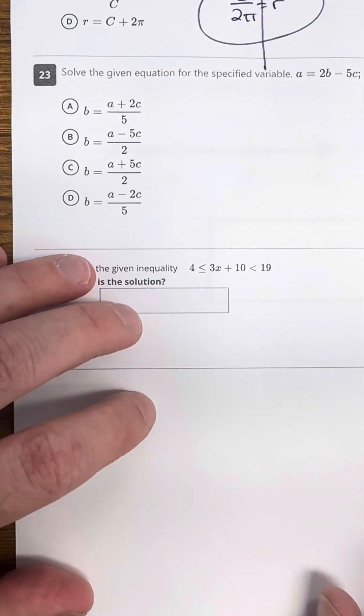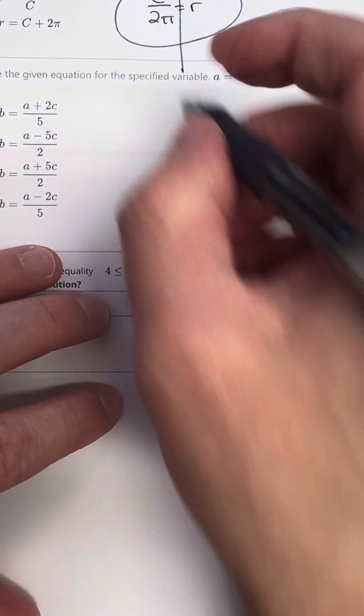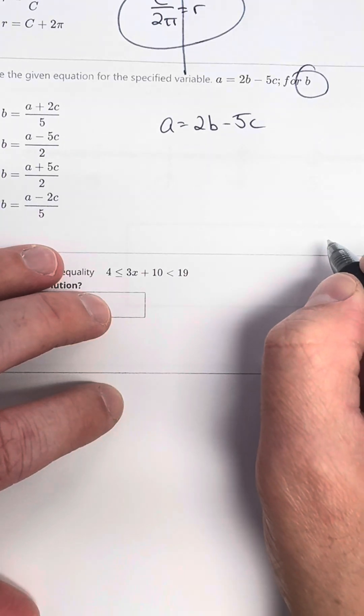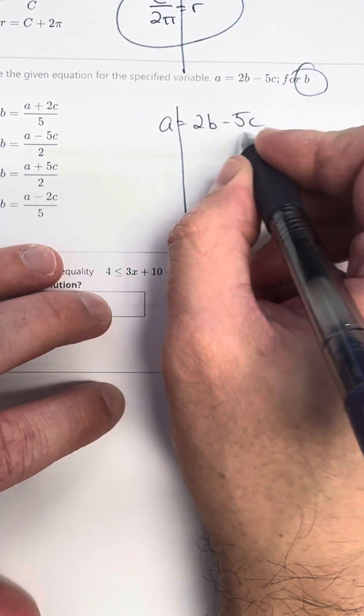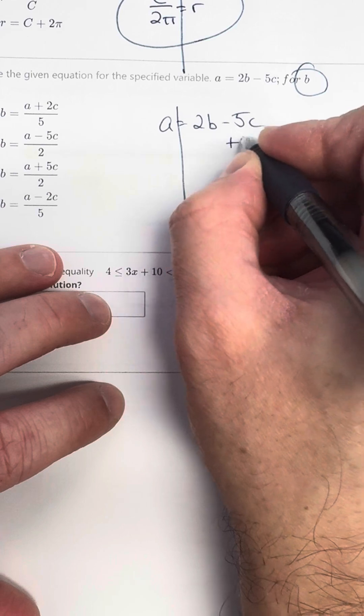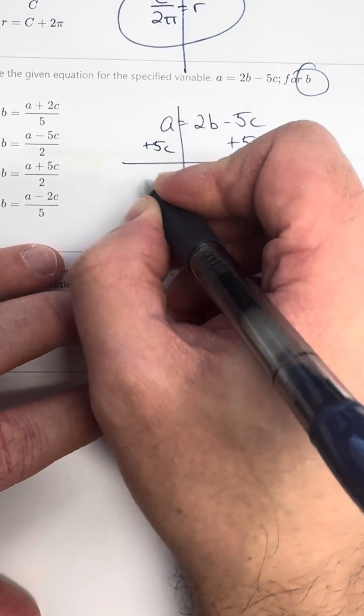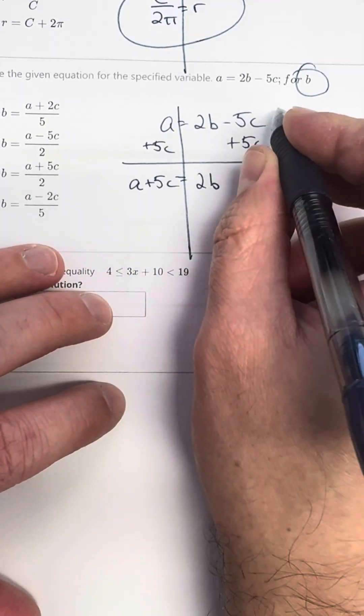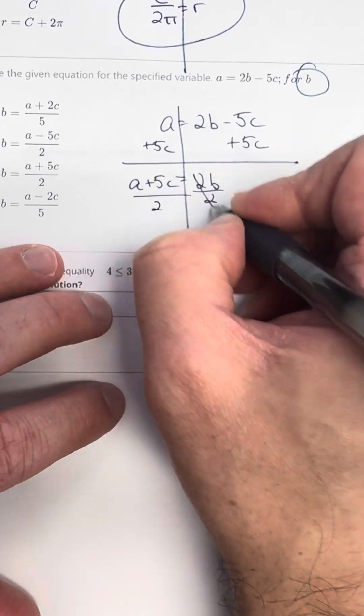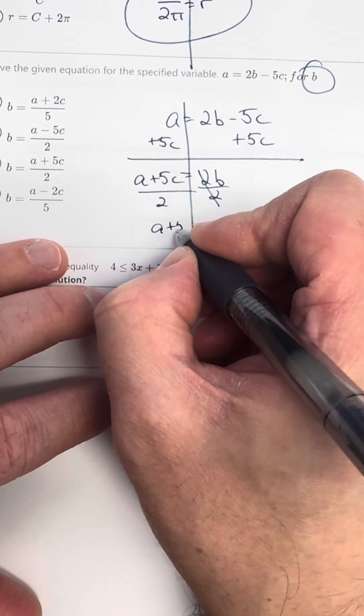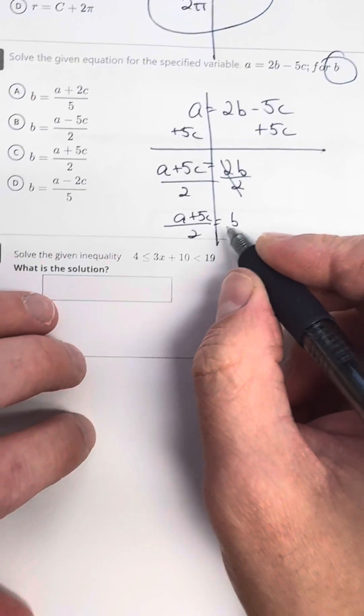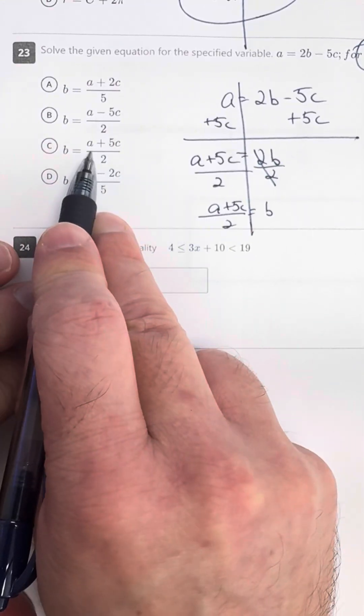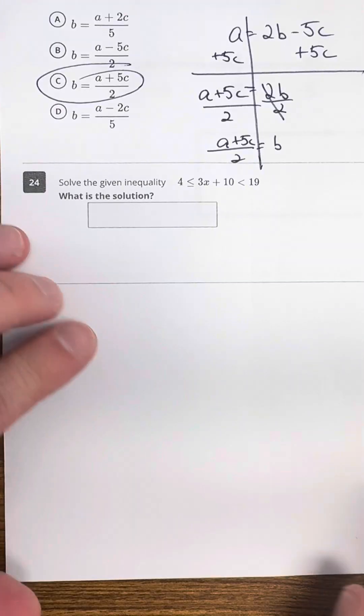Okay, 23. I've got this equation. It's A equals 2B minus 5C. I want to solve for B. So I want B to stay, which means I first have to unlink this negative 5C by adding 5C to both sides. So then I have A plus 5C equals 2B. And again, I'm trying to solve for B. So I'm going to divide by 2 on both sides. Final answer is A plus 5C over 2 equals B. This is just like the previous problem we had, right? Make sure you select the right answer, though, because I think some of you are going to make a mistake on this. A plus 5C over 2.